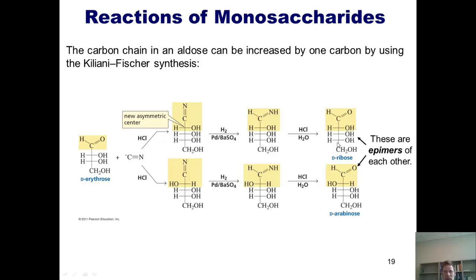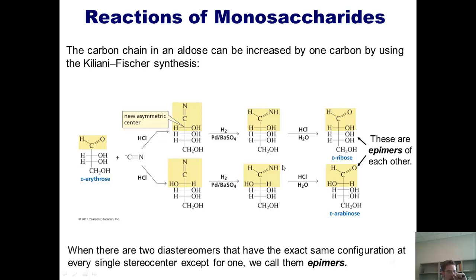Thus, if we compare these two stereoisomers, you can see that the stereochemical configuration at every single stereocenter is identical except for this one stereocenter. In D-ribose, the OH is going to the right. In D-arabinose, OH is going to the left. So to reemphasize this point, when we have two diastereomers that have the exact same configuration at every single stereocenter except for one, we can call them epimers.